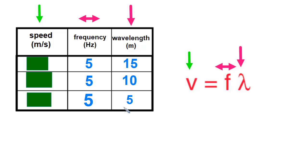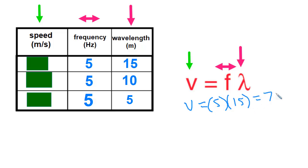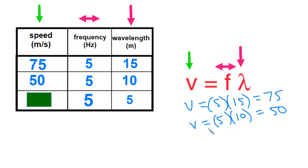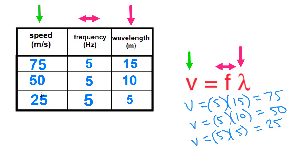Calculating the speeds: 5 times 15 equals 75, then 50, then 25. Speed goes 75, 50, 25 — it got smaller, just as we predicted. Arrow math correctly predicted that speed would decrease.